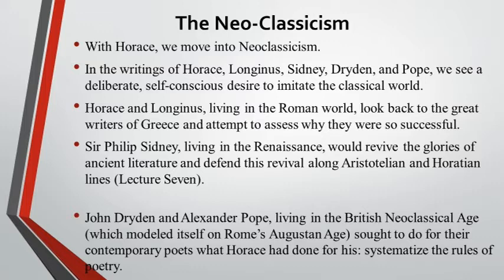Virgil's Aeneid would be neoclassical because it imitates the classical Homer, to give you a poetic example. In this lecture we'll look at Horace; in the next lecture we'll look at Longinus. Both of these men lived in the Roman world and looked back to the great writers of Greece, attempting to assess why they were so successful. So both Horace and Longinus are Romans looking back to the Greeks, trying to figure out why their poetry was so great.